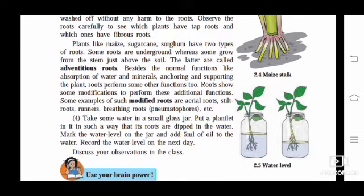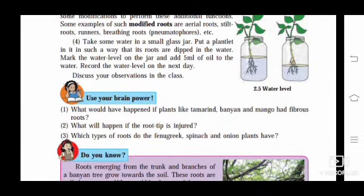Fourth activity: Take some water in a small glass jar. Put a plantlet in it in such a way that its roots are dipped in the water. Mark the water level on the jar and add 5 ml of oil to the water. Record the water level on the next day. Day by day, as shown in figure 2.5, the water level in the jar will get reduced because it shows that roots absorb the water.